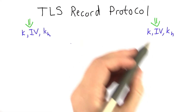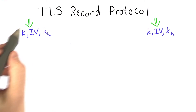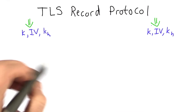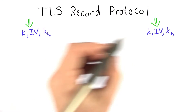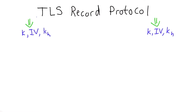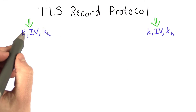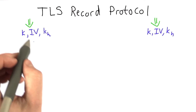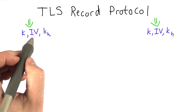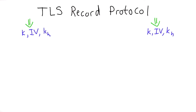At the end of the TLS handshake protocol, the server and the client have agreed on three keys, which they've extracted from the master secret: a key for a symmetric encryption function, an initialization vector for that encryption, and a key for a hash function.